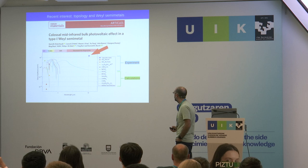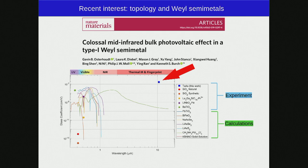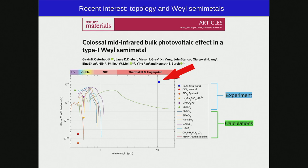Another example hitting hard in the field is the shift current in Weyl semimetals. In an experiment on tantalum arsenide, the figure of merit — the Glass coefficient, which describes how efficiently a system absorbs light and turns it into current — was found to go far above all previously existing ferroelectrics and other materials, suggesting Weyl semimetals have enhanced contributions to the bulk photovoltaic effect.